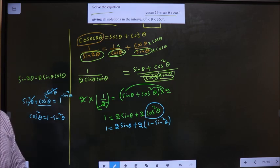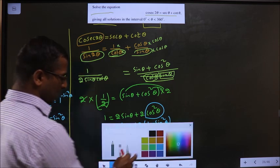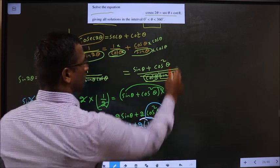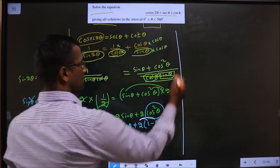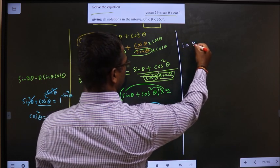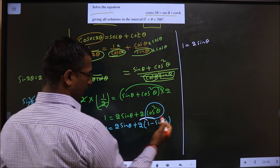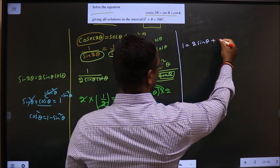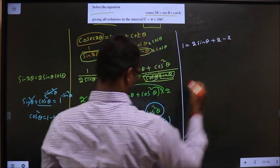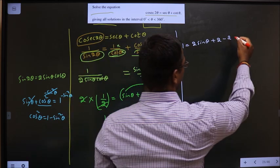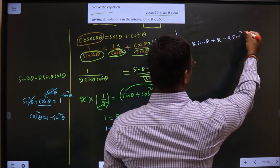Open up the bracket, or what I mean is multiply with 2. What do I get? 1 equal to 2 sin θ, 2 into 1 is 2, minus 2 sin square θ.